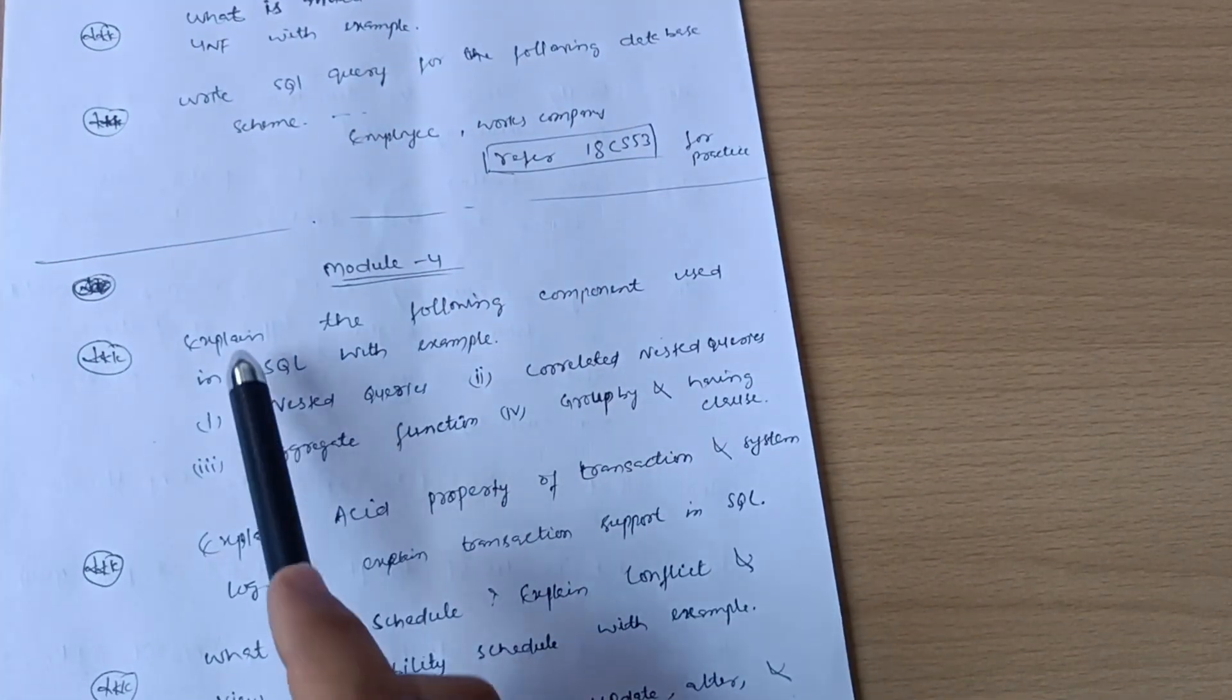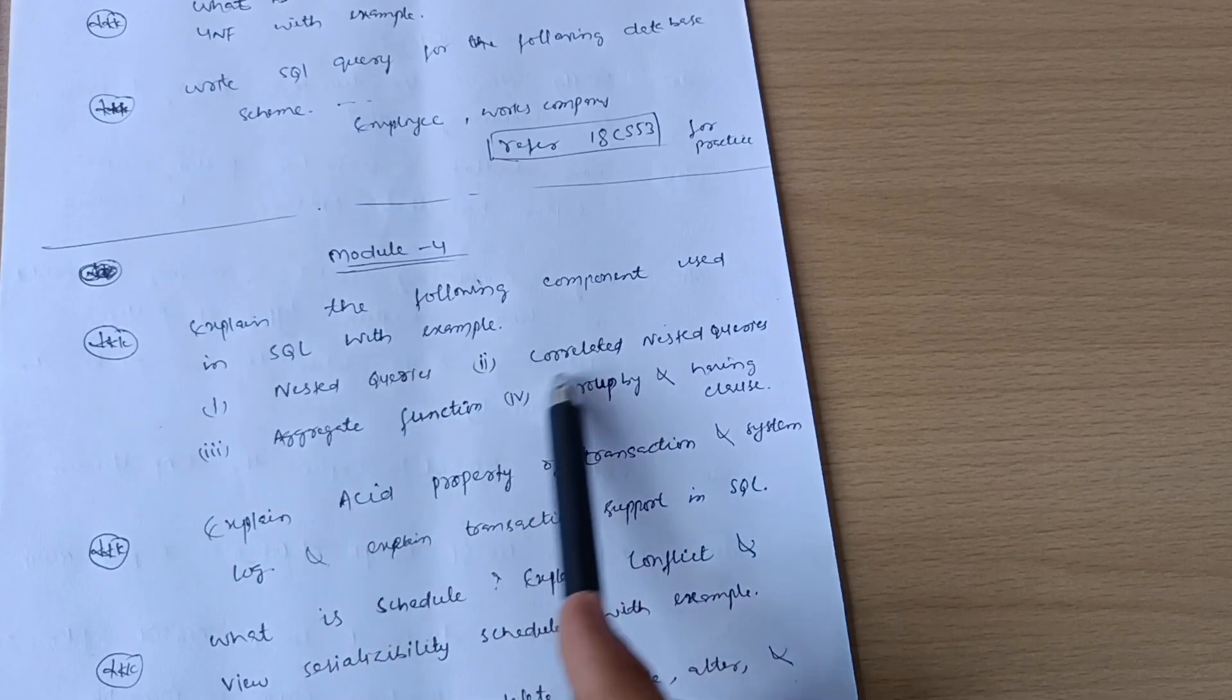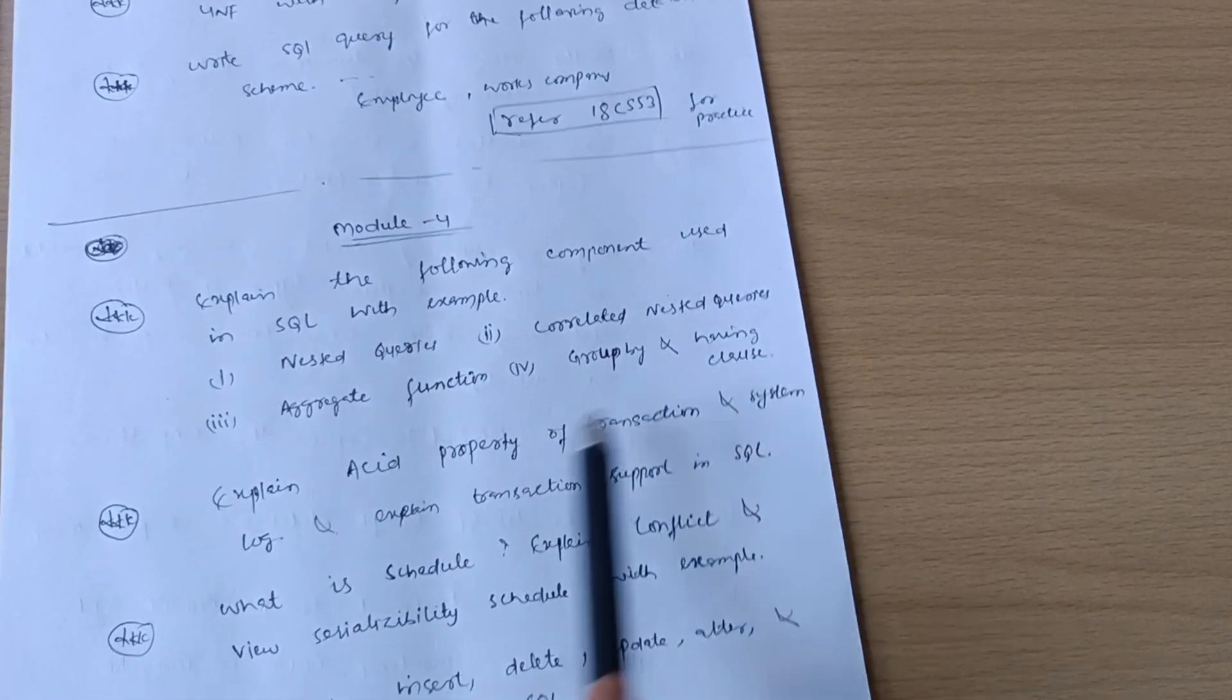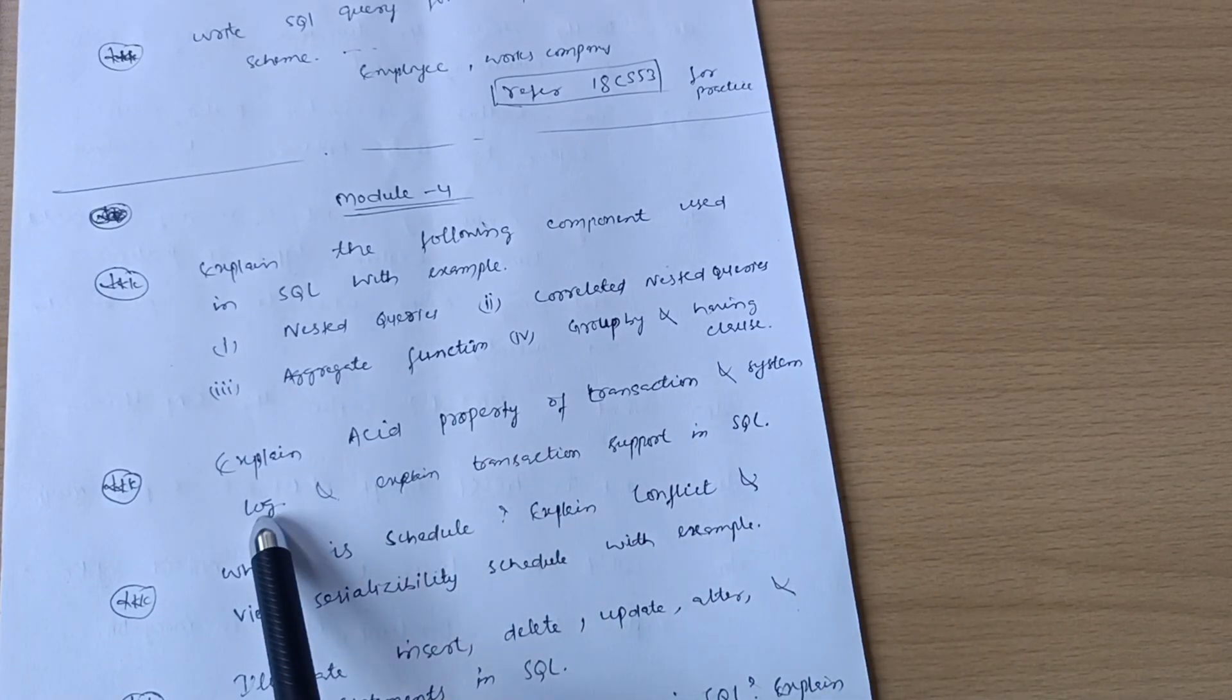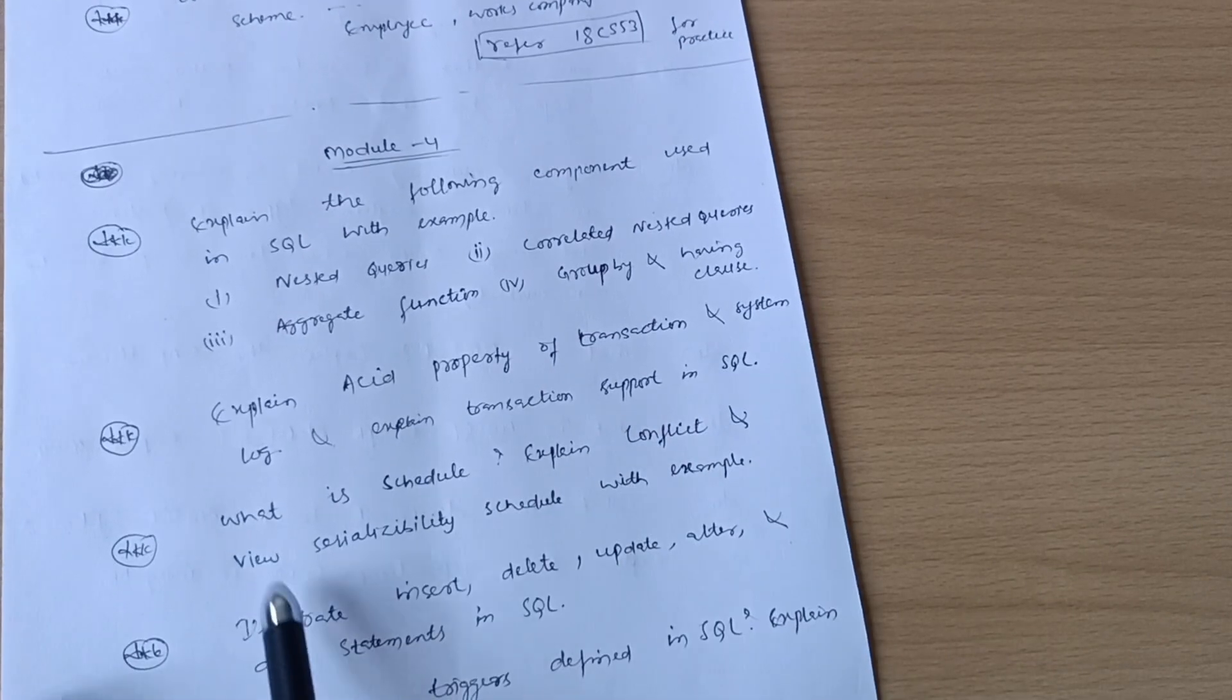Model 4: Explain the following components used in SQL with examples - nested queries, correlated nested queries, aggregate functions, GROUP BY and HAVING clauses. Explain ACID property of transactions and system log. Explain transaction support in SQL.